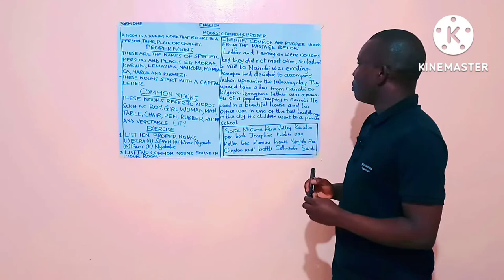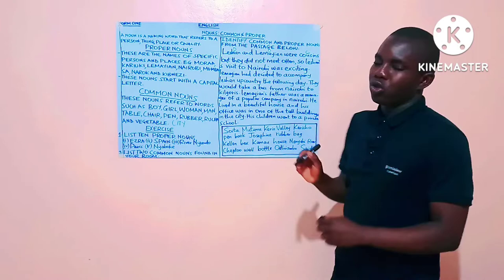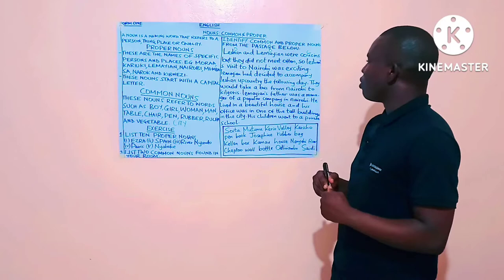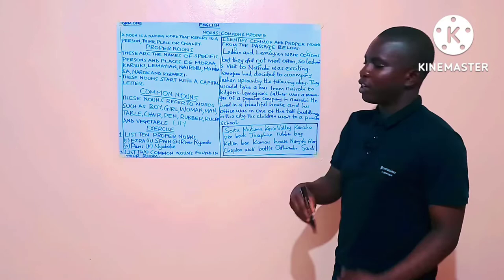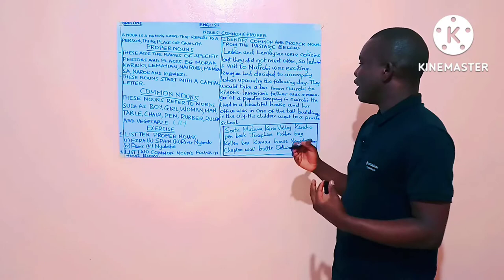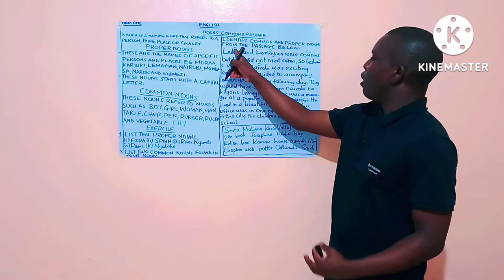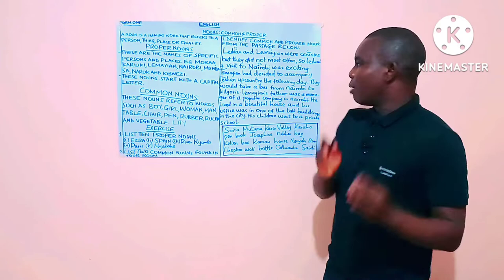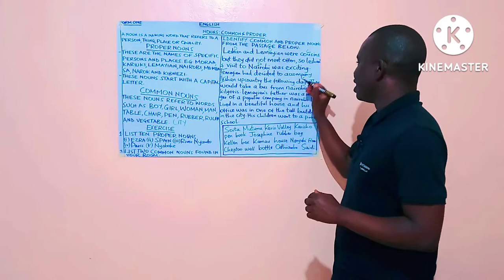We will assign P. We are cousins. Cousins is a common noun because we are not specific. It is used in a general way. But they do not meet often. So, Leshan's visit to Nairobi was exciting. So, Nairobi is a proper noun. The specific name of a city. Lemayan had decided to accompany Leshan upcountry the following day. Leshan and Lemayan, as we found, are proper nouns.